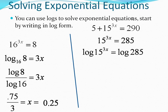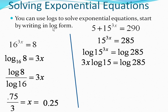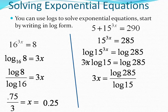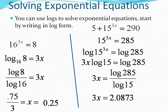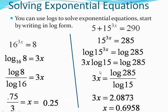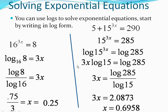From this step to the next step is that power property, where you take the power 3x and move it out front to be the coefficient. To solve, you would divide both sides by log of 15, type that in the calculator, divide both sides by 3, and you get your decimal approximation for that logarithm.